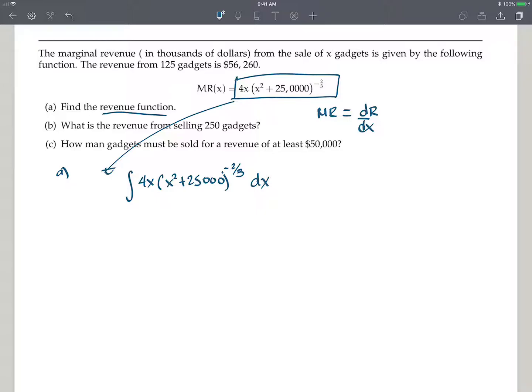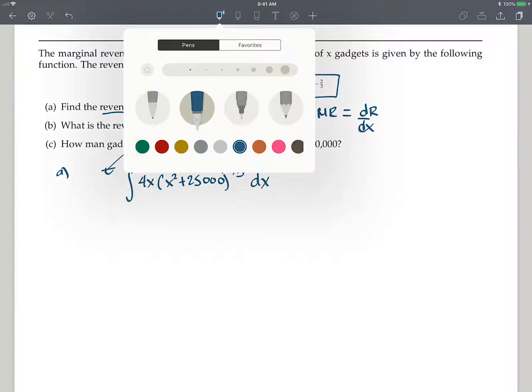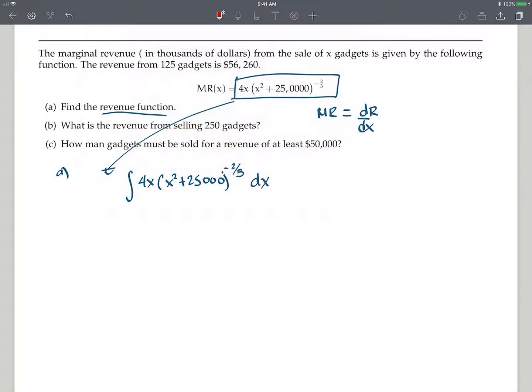We need to be careful that our u, in this case, would be this part of the function right here. This is going to be my u. So if I call u to be x squared plus 25,000, then du will be 2x dx. And like I said in our other video where I did a couple of examples of u substitution, I like to solve for what I have here. So I have, I have a change color here.